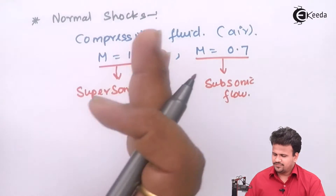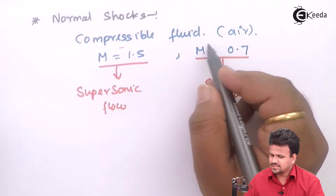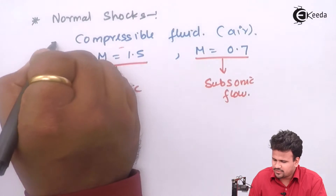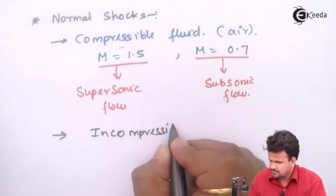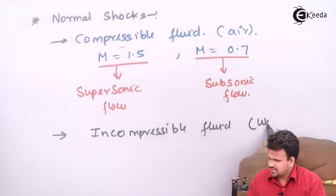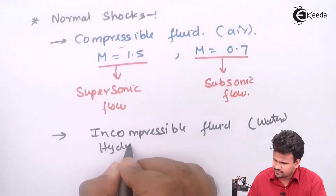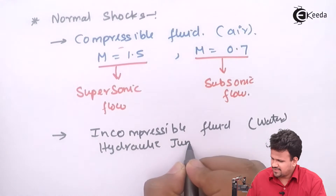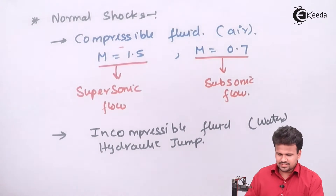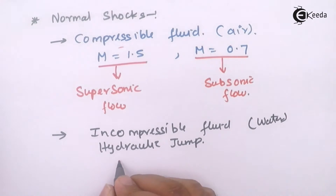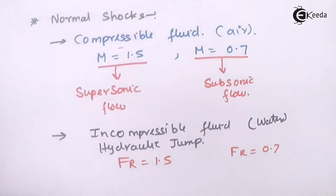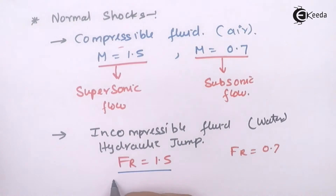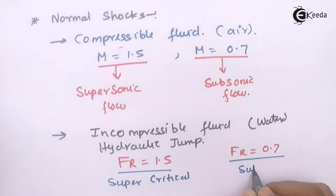So we have a fluid which has supersonic flow as well as subsonic flow. The analogous quantity of normal shock in an incompressible fluid such as water is hydraulic jump. In hydraulic jump, compared with Froude number: if the Froude number equals 1.5 it is called supercritical flow, and if the Froude number equals 0.7 that part is called subcritical flow.